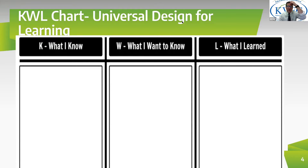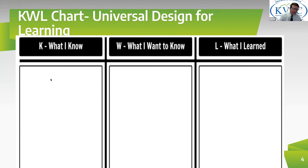The first thing I want you to do is consider this topic — universal design for learning — and take a moment to write down anything that you might know. Make your own little chart: what I know, and as we move through, you'll use that same chart for what I want to know, and at the end, what I learned.